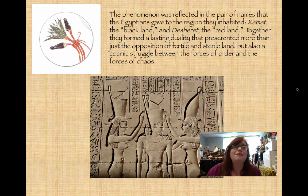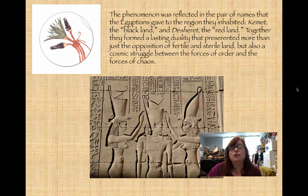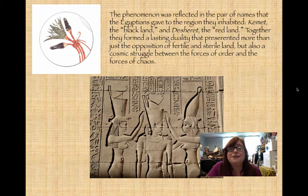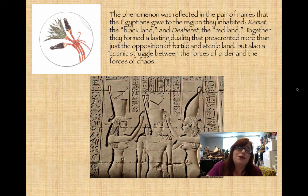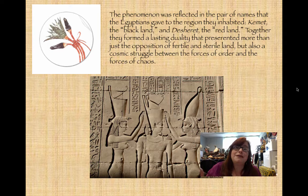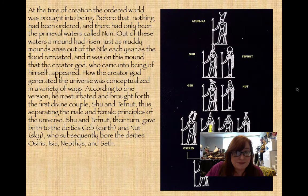Here we have an image representing Desheret and Kemet — the papyrus plant and the lotus. When shown together united like this, it represents the union of ancient Egypt. It's not just a pretty picture; it's also a hieroglyph representing that. We also see the pharaoh standing between two goddesses — probably Isis and her sister Nephthys — each wearing a different headdress. On the king's head the crowns are combined: the red crown of Lower Egypt on the left and the white crown of Upper Egypt on the right, showing that he has united the land and overcome the cosmic struggle between order and chaos.